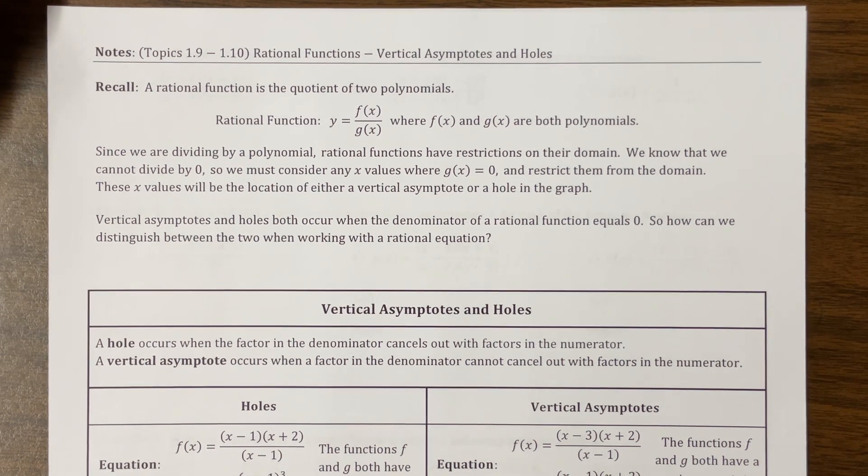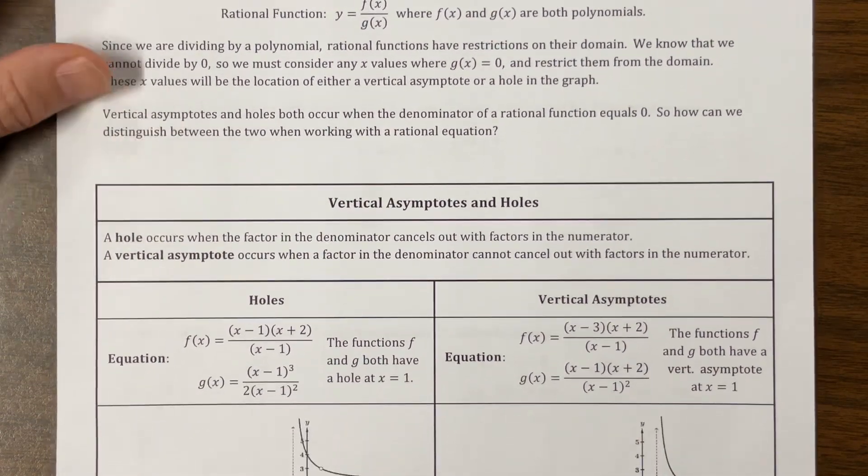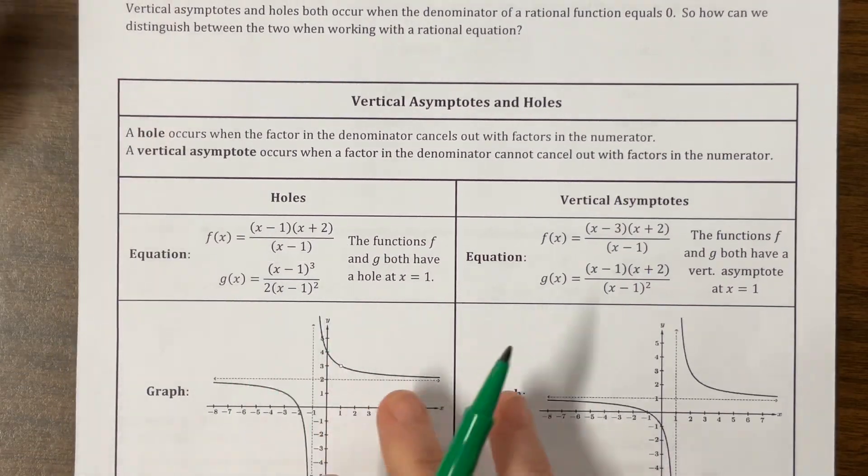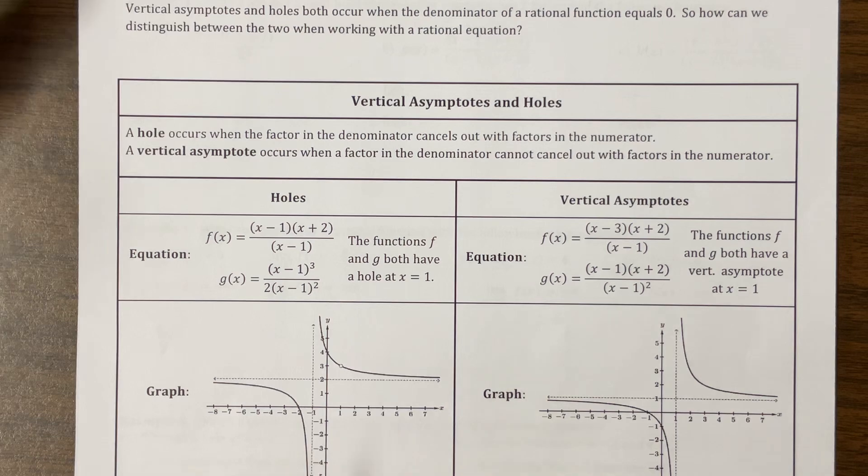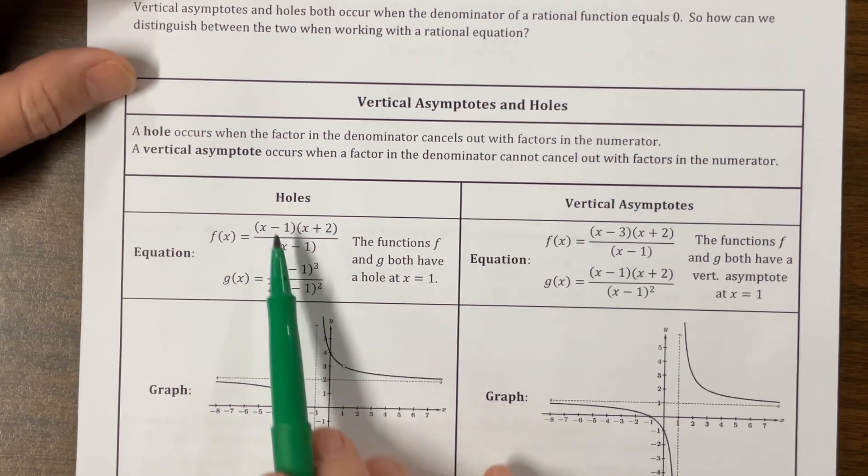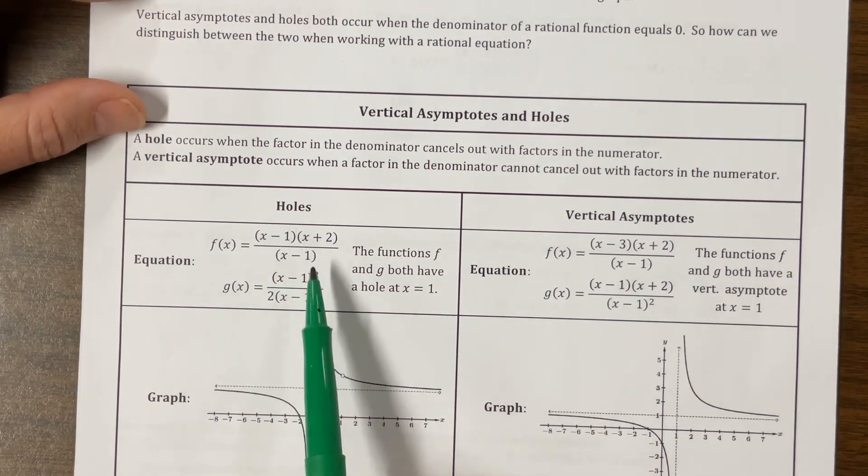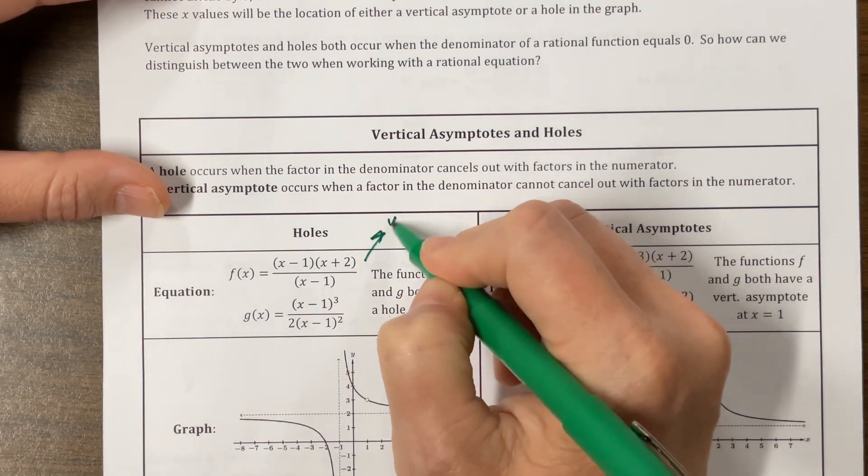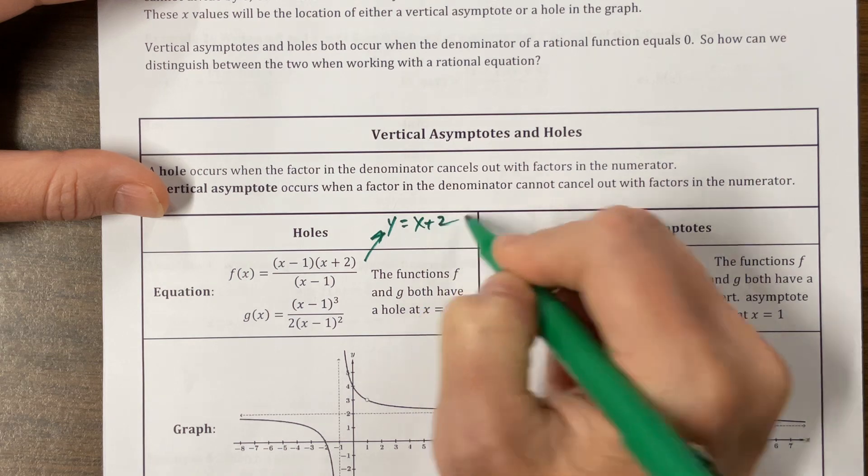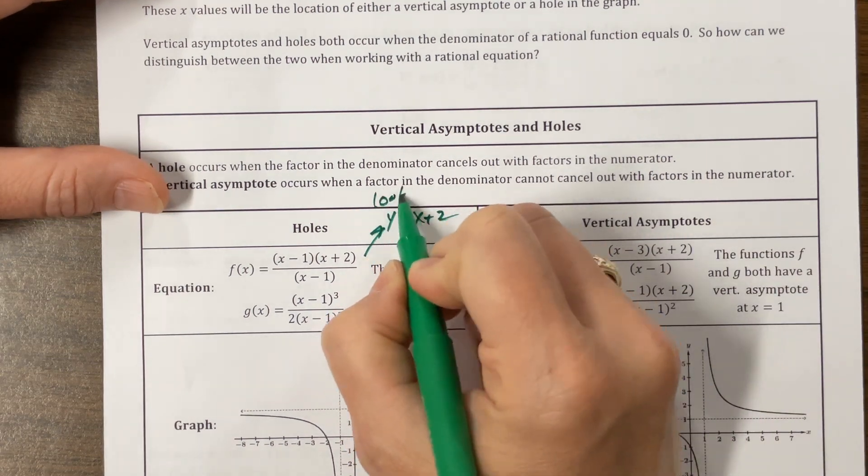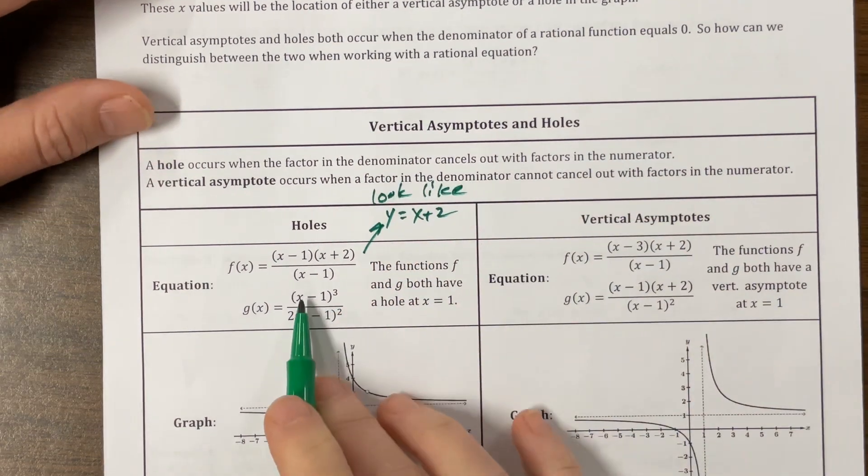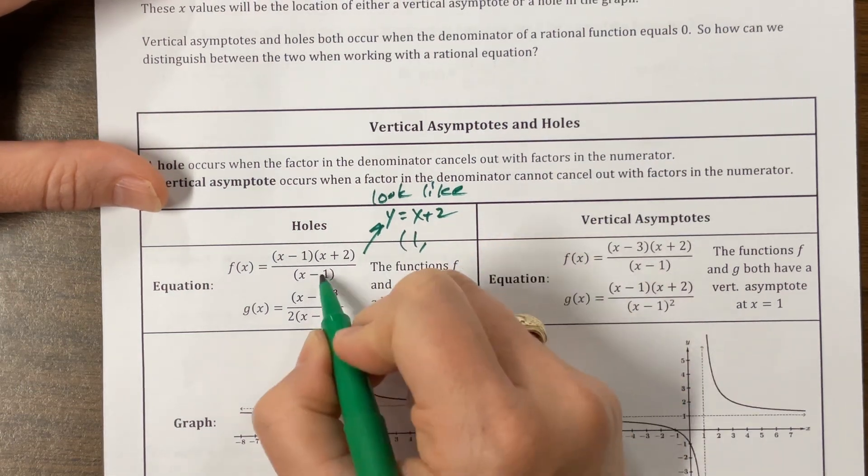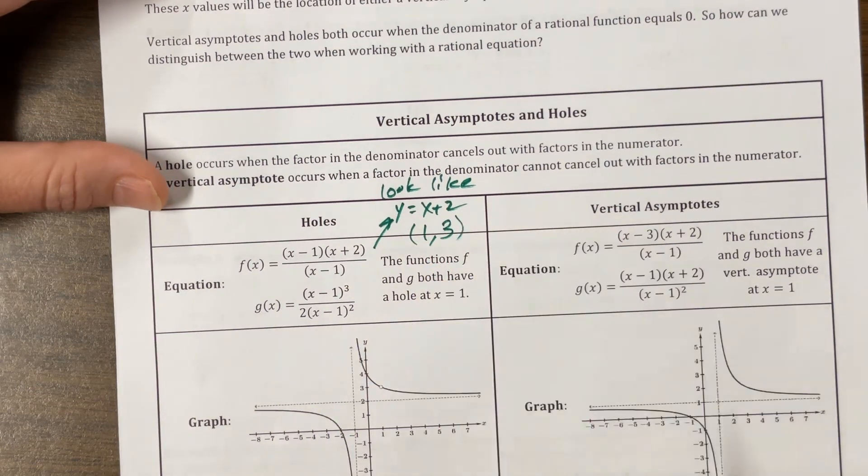A hole is what you find when a term shows up in both the numerator and the denominator, when it removes itself. So on this one, we have an x minus 1 in both the numerator and the denominator. This equation will look like y equals x plus 2, but then I recognize that it has a hole when x equals 1. When I plug in 1 to this equation, it's going to have a hole at (1, 3).